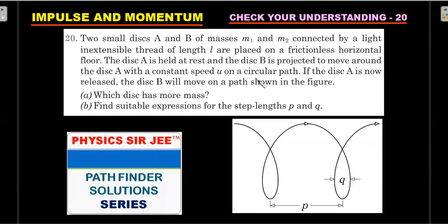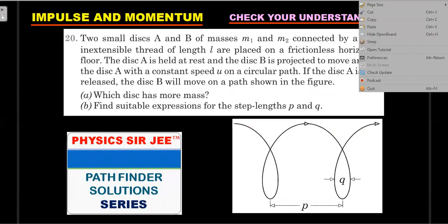Let's look at the second question. Two small discs A and B of masses m1 and m2, connected by a light inextensible thread of length l, are placed on a frictionless horizontal floor. Disc A is held at rest and disc B is projected to move around disc A with constant speed u on a circular path. These are particle-type discs. When disc A is released, disc B moves on a path as shown — which looks similar to the prolate cycloid. We need to determine which disc (m1 or m2) has more mass, and characterize the distances p and q on the path.